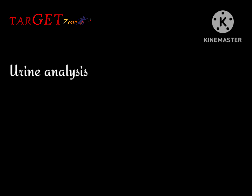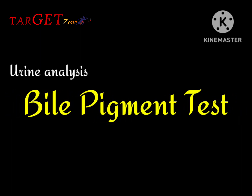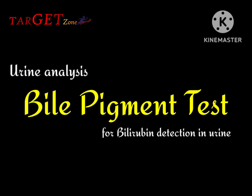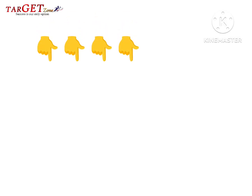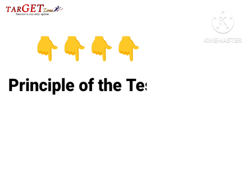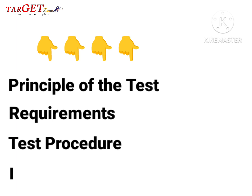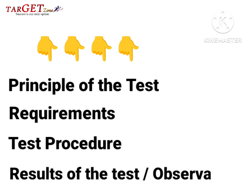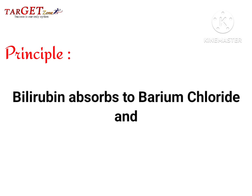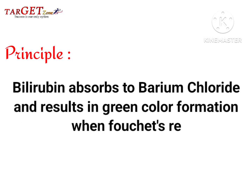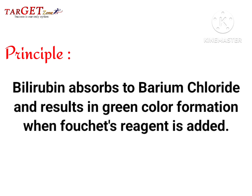Hello everyone. Today we have discussed a small topic of urine analysis. This is the method or test to detect bilirubin level in urine. The test uses barium chloride solution, and its result is green color formation when the Fouchet's reagent is added.